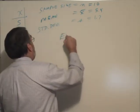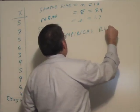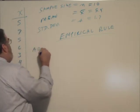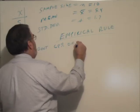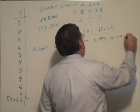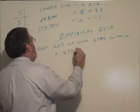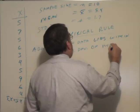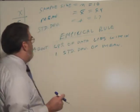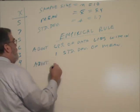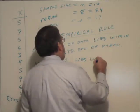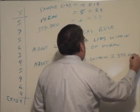So the empirical rule says this. It says that about 68 percent of data lies within one standard deviation of the mean. About 95 percent of data lies within two standard deviations of the mean.